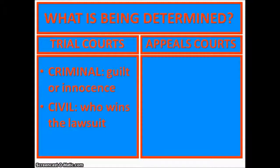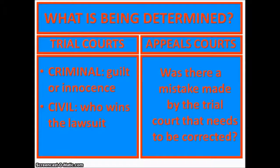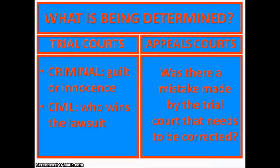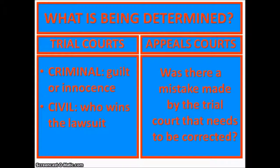In an appeals court, they are simply deciding whether there was a mistake made by the trial court that needs to be corrected. The simplest example is when a defense attorney believes the police conducted an illegal search. Because of the exclusionary rule, any evidence found during an illegal search is supposed to be inadmissible in a trial — it can't be heard or viewed by the jury.